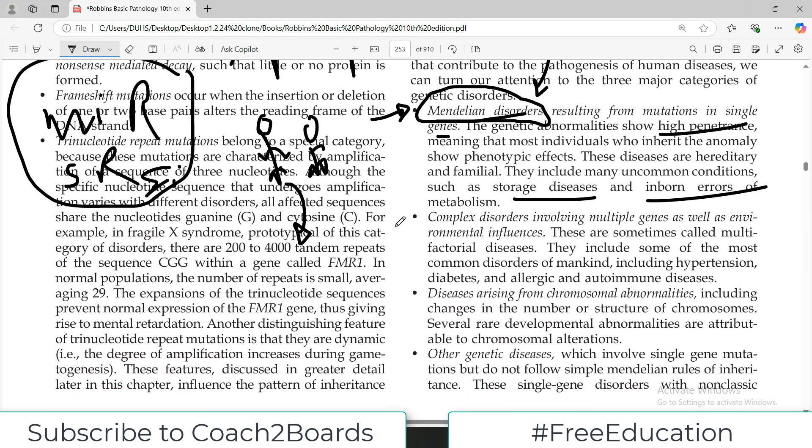Then we have complex disorders involving multiple genes as well as the environmental factors. So for example hypertension, diabetes, allergy have a genetic component as well as environmental factors, even cancer, even cancer.